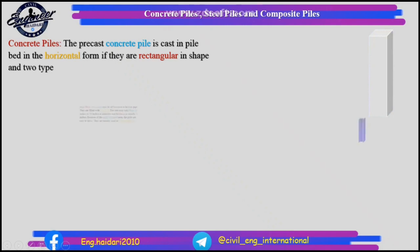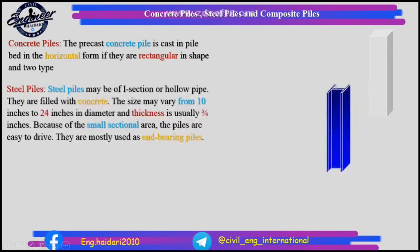Steel piles: steel piles may be of I-section or hollow pipe. They are filled with concrete. The size may vary from 10 inches to 24 inches in diameter, and thickness is usually three-fourths of an inch. Because of the small sectional area, the piles are easy to drive. They are mostly used as end bearing piles.